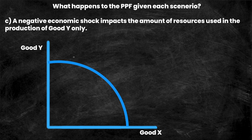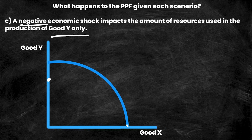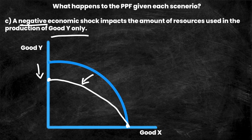In example C, a negative shock impacts the amount of resources used in the production of good Y only. This is a negative economic shock affecting good Y only, so we're going to be able to produce strictly less of good Y. The y-intercept moves down, but it doesn't impact good X at all — X's maximum production stays the same. Our PPF curve pivots on the x-intercept, giving us a new lower y-intercept, since the maximum amount of good Y we can produce is strictly less than before.